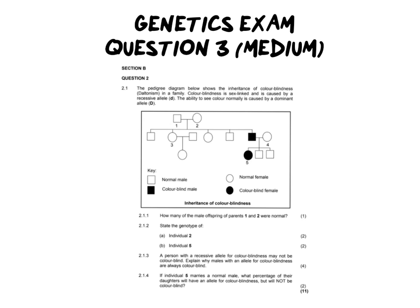So let's get into this exam question and let's read through the details. So we have a pedigree diagram in front of us and it says that it shows the inheritance of colorblindness in a family. Colorblindness is sex-linked which is important for us to know and it is caused by the recessive allele with a lowercase d. The ability to see color normally is caused by the dominant allele capital D. So they've given us some important information.